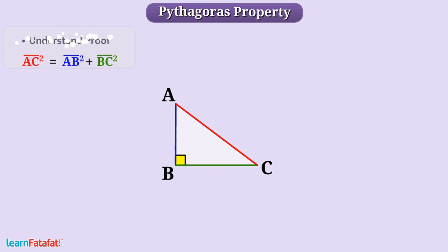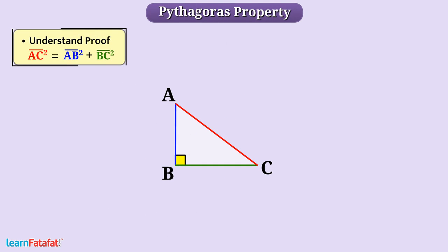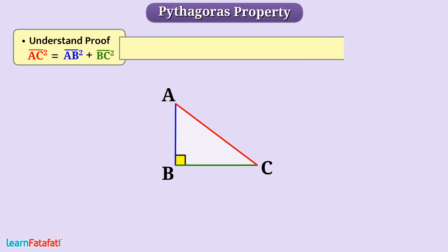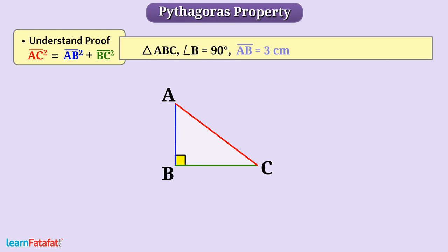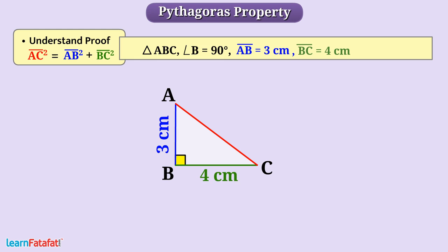Let's understand its proof. Here is the right triangle ABC with right angle at B, in which AB is equal to 3 cm, BC is equal to 4 cm, and AC is equal to 5 cm.